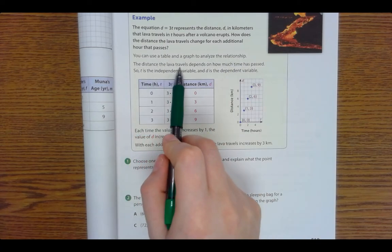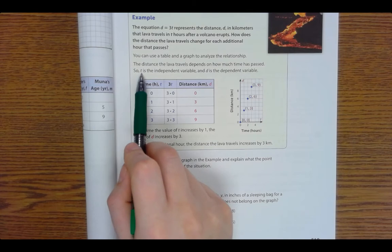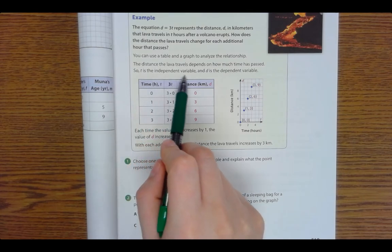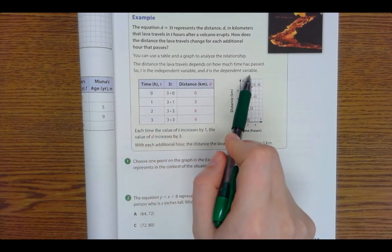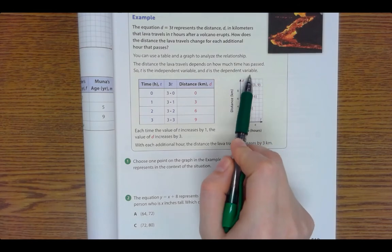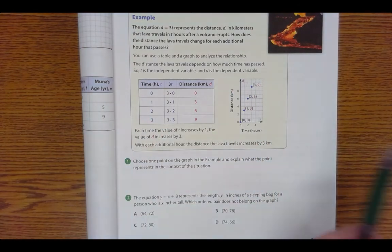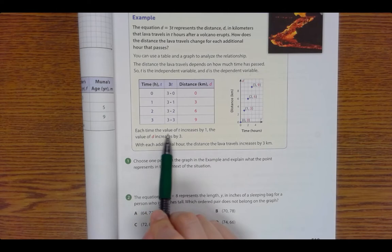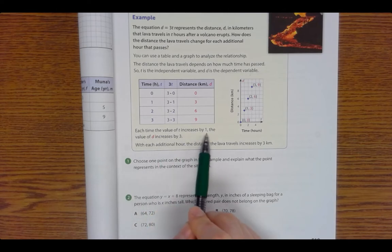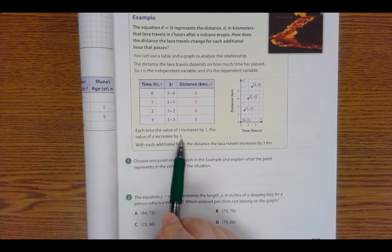The distance the lava travels depends on how much time has passed. So t is the independent variable and d is the dependent variable. So distance depends on how much time has passed. So each time the value of t increases by 1, the value of d increases by 3.